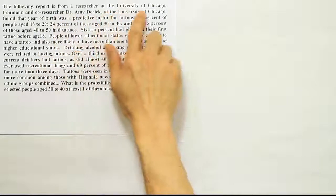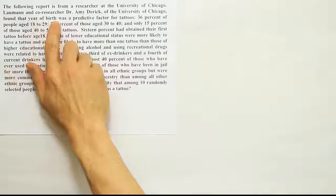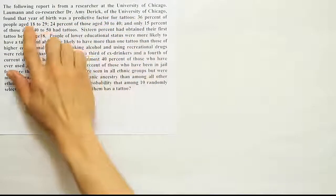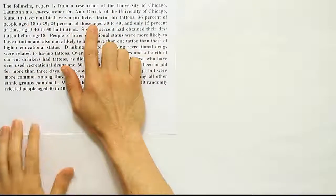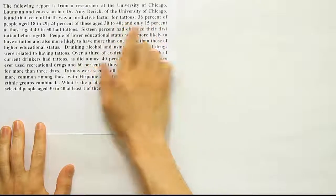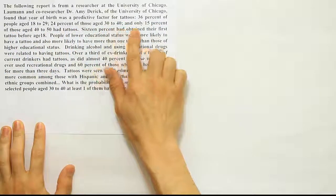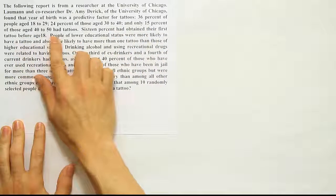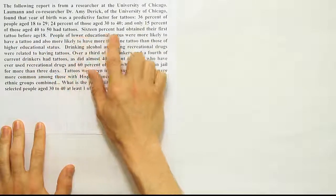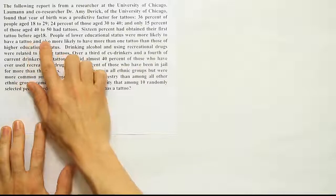The following report is from a researcher at the University of Chicago. Lauman and co-researcher Dr. Amy Derrick at the University of Chicago found that year of birth was a predictive factor for tattoos. 36% of people aged 18 to 29, 24% of those aged 30 to 40, and only 15% of those aged 40 to 50 had tattoos. 16% had obtained their first tattoo before the age of 18.